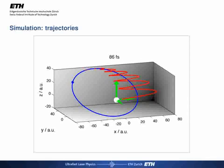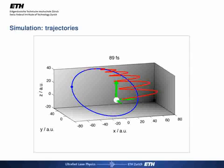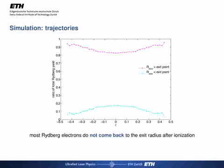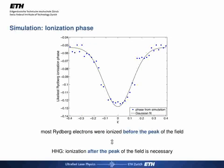The electron always stays relatively far away from the ion; its closest point is the tunnel exit. This is the typical behavior for Rydberg trajectories — at least 80% of all Rydberg electrons always stay further away than their exit radius at ionization. Looking at the phase of the field at the moment of ionization, it is revealed that Rydberg electrons are ionized predominantly before the peak and therefore do not re-scatter. In contrast, electrons involved in high harmonic generation are ionized after the peak of the electric field and therefore come back to the parent ion.